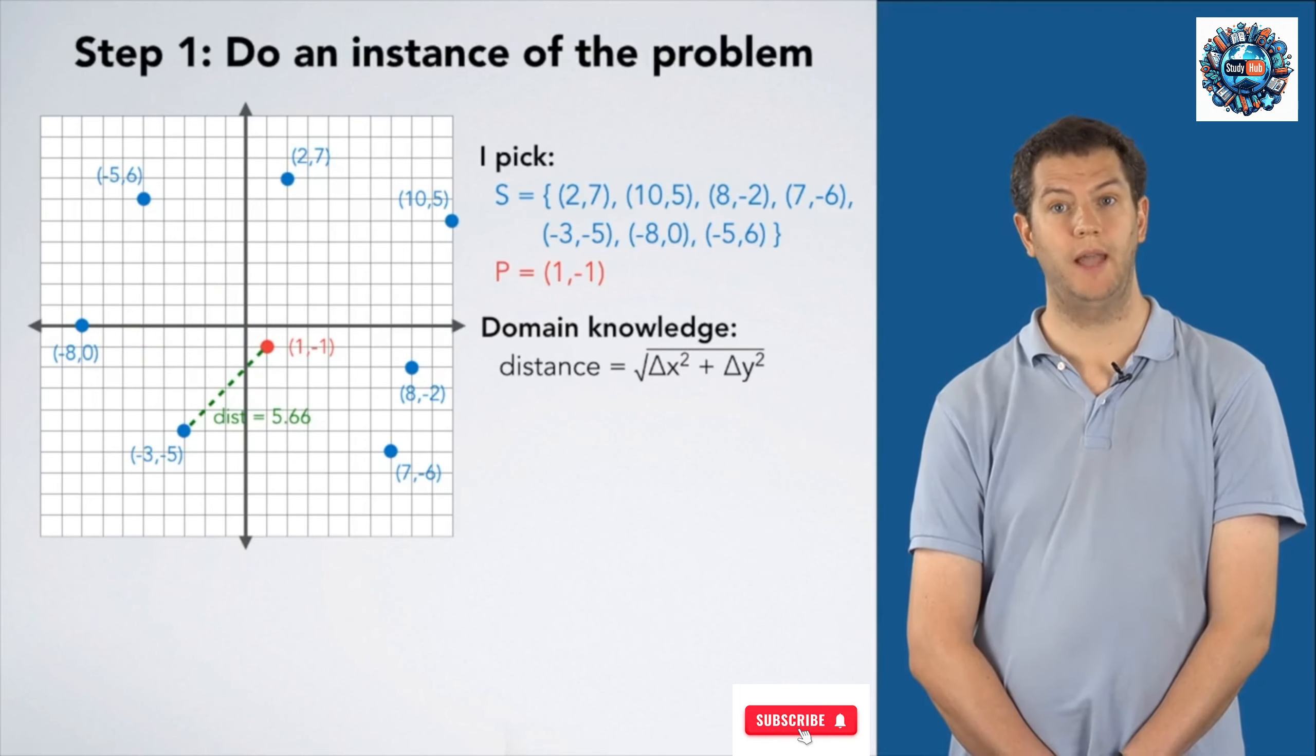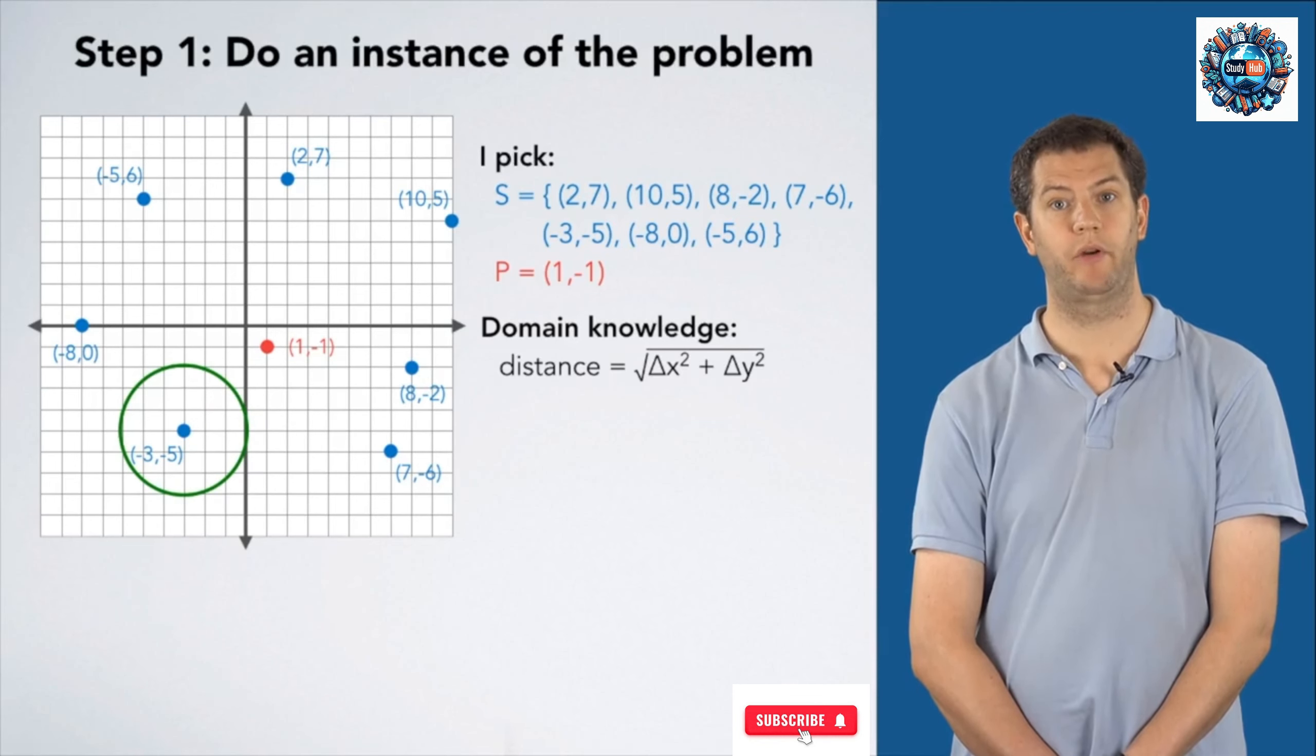And, there are no more points to test, so (-3,-5) is my answer, to which point is closest to (1,-1). If we visually inspect this picture, that seems pretty reasonable. It looks like the closest.